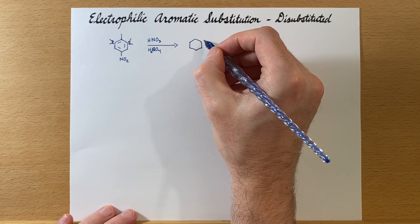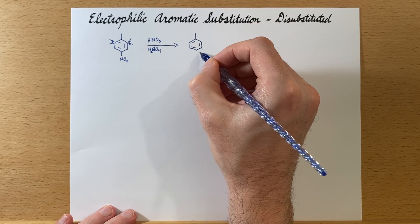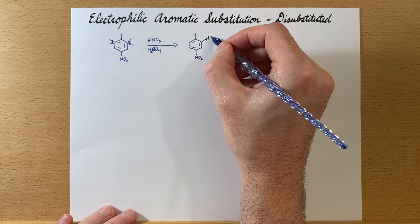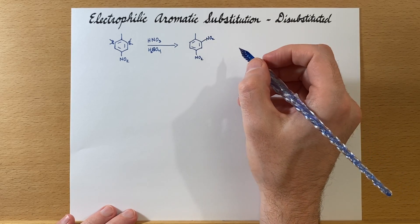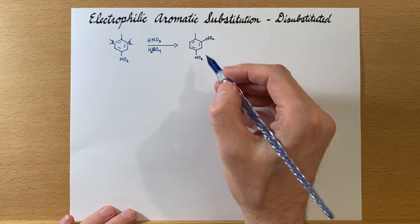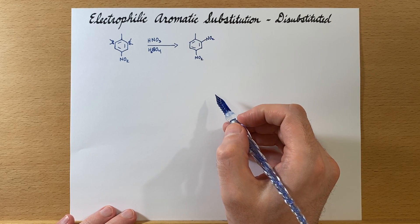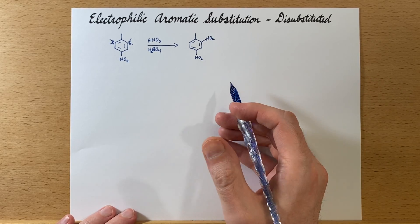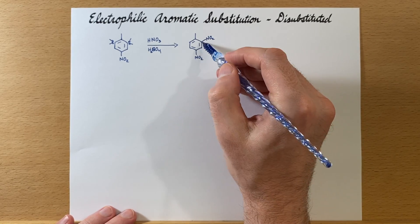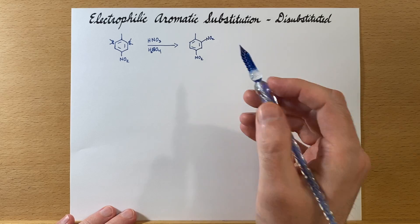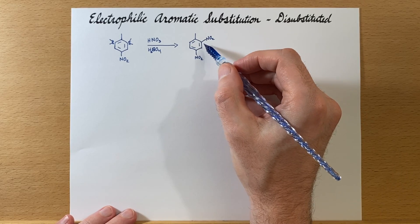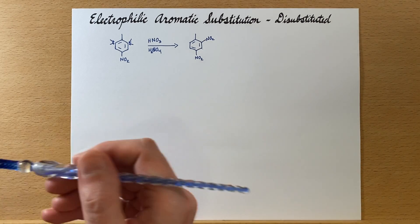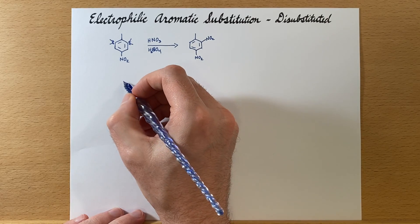Ortho to the alkyl group, which is symmetrical, so it doesn't really matter which position we're going for — either one of these is the same. They're both pointing at the same position. Now, what happens when one of them is saying this position and the other one is saying that position? What if they kind of disagree on where the substituent should go? So let's draw up a situation where that will happen.